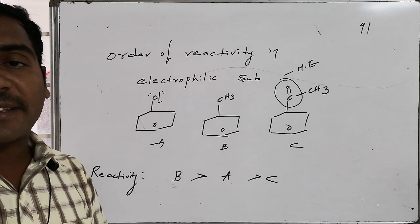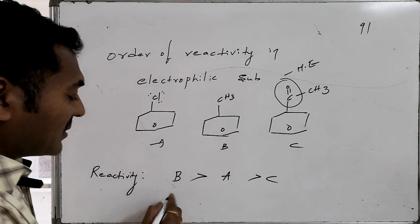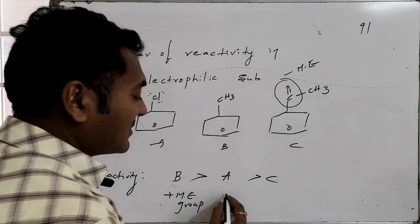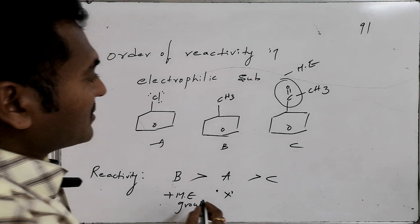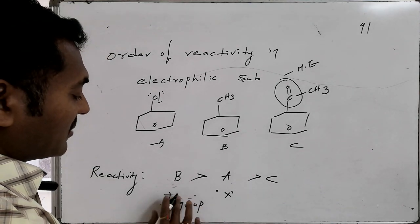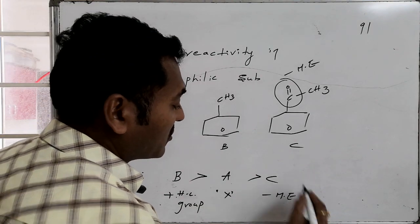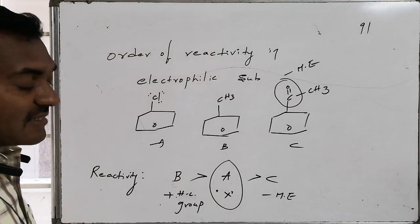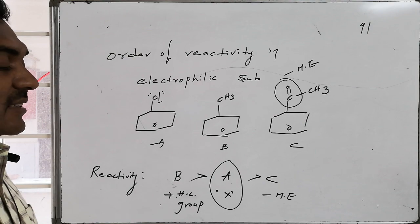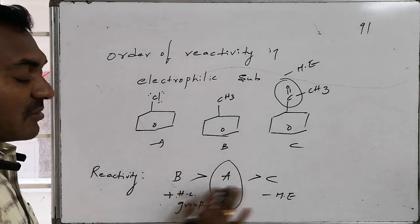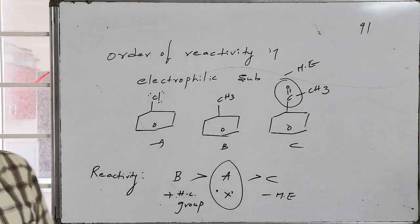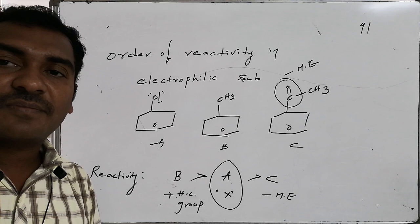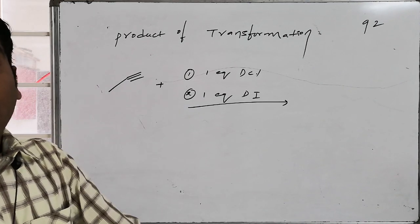To summarize the electronic effects: the methyl group is a plus-M / hyperconjugative group that increases electron density and raises reactivity. The halogen is a special case — it is deactivating (electron-withdrawing inductively) but ortho/para directing, so reactivity is somewhat reduced compared to normal cases but greater than minus-M substituted rings. The acyl group is a minus-M group that strongly decreases electron density and reactivity. Hence the reactivity order holds: methylbenzene > chlorobenzene > acylbenzene.